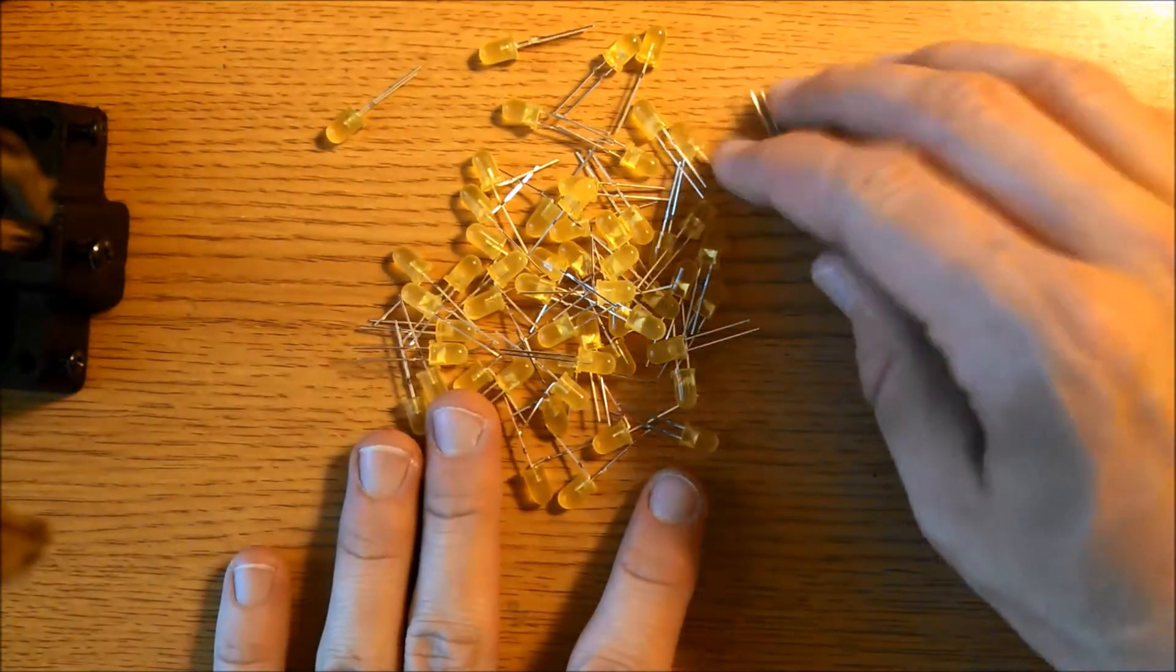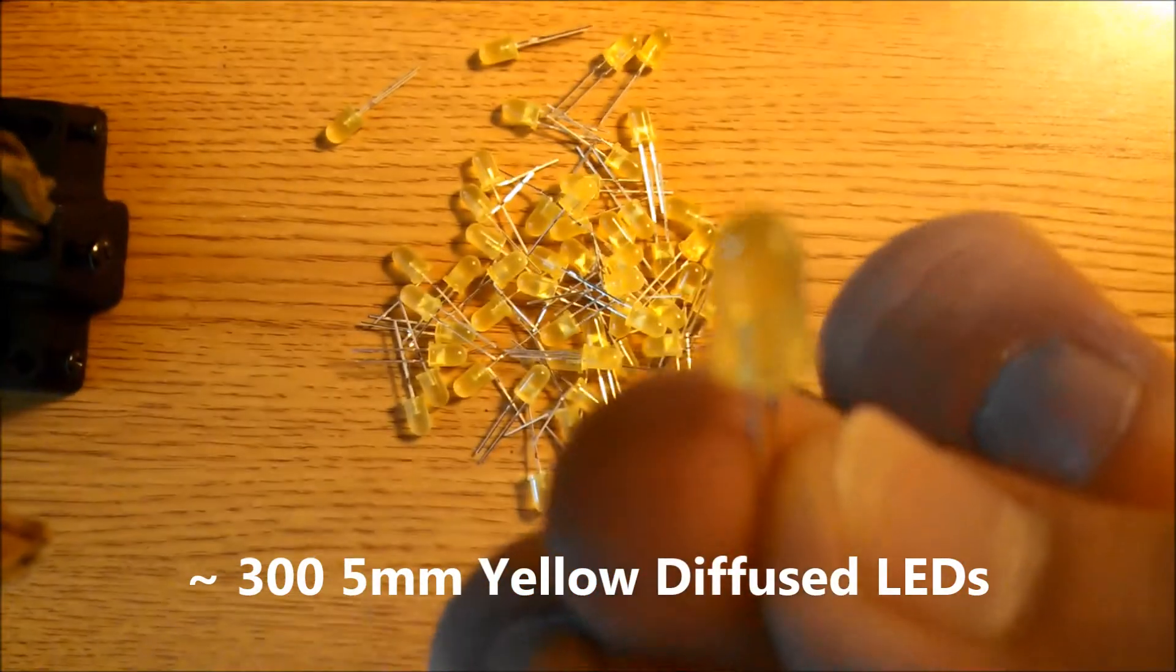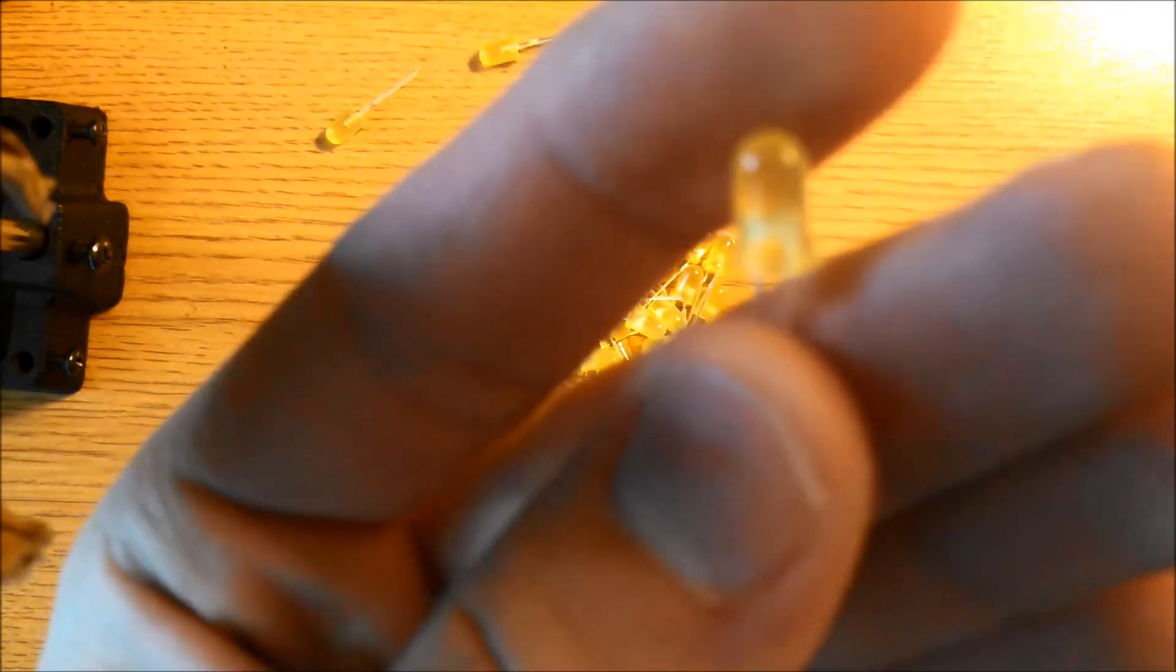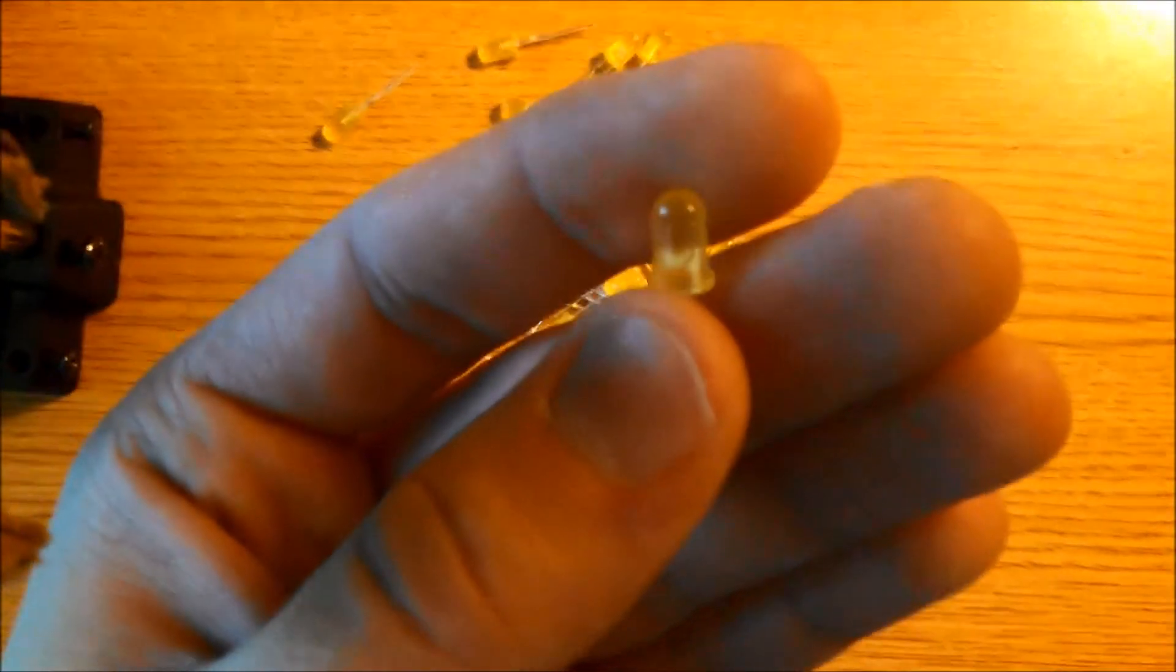You will need around 300 5mm yellow diffused LEDs. I would recommend you get the diffused type, because they just look a lot nicer than if you get the non diffused.